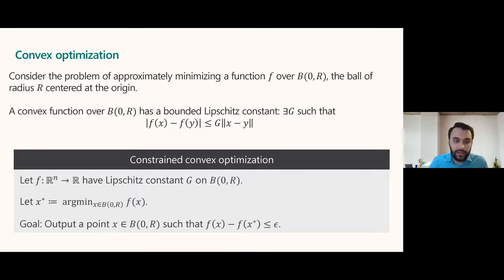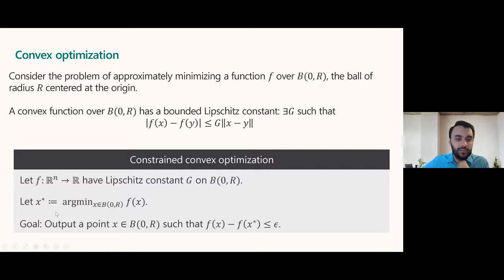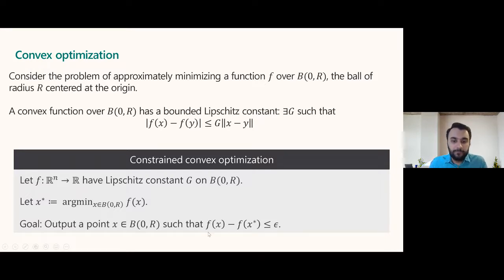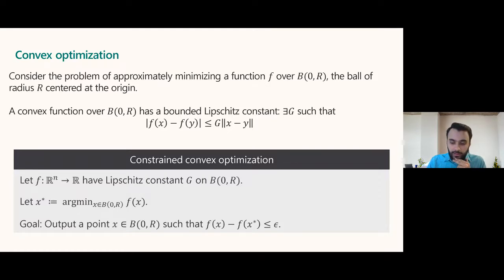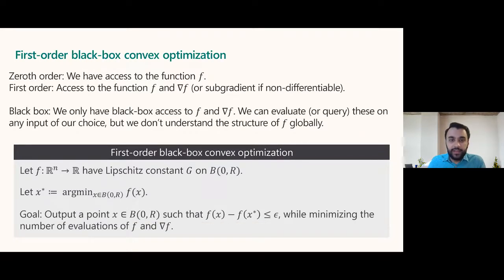Now I can formally state the problem: you're given a function with Lipschitz constant G, and you want to minimize it on a ball of radius R around the origin. Let x-star be the minimum in this ball. Our goal is approximately minimize — output some point x such that f(x) minus f(x-star) is at most epsilon. There are four parameters: dimension N, Lipschitz constant G, radius R, and error epsilon. Due to freedom of scaling the input and output spaces, there are really only two effective parameters: N and G times R over epsilon.